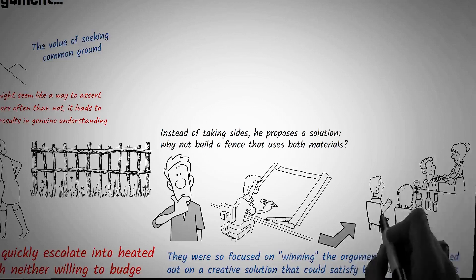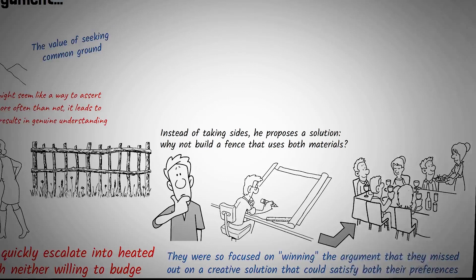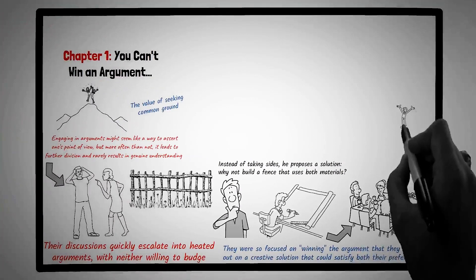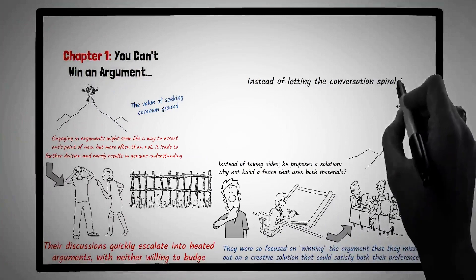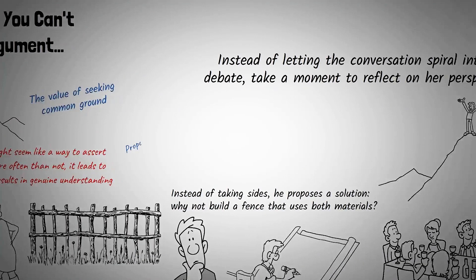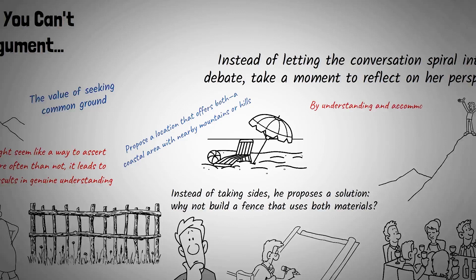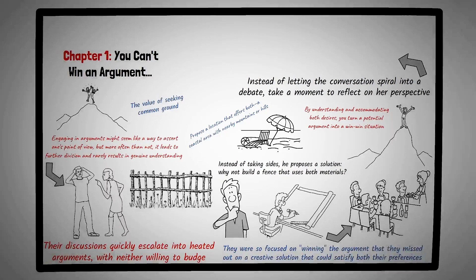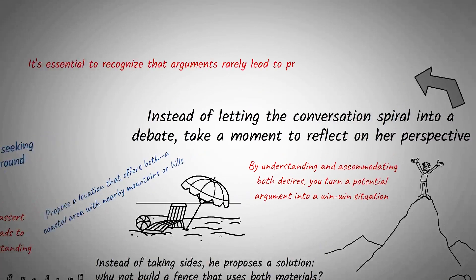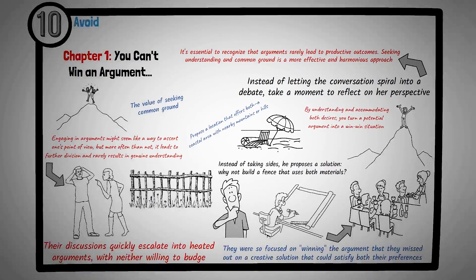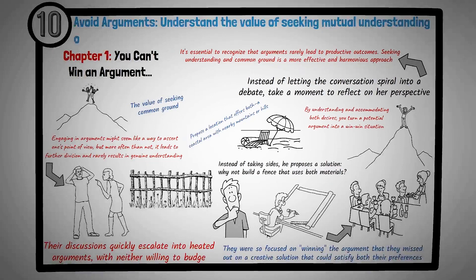Imagine you're at a family dinner where the topic of vacation destinations arises. Your sister is keen on a beach getaway, citing the need for relaxation, while you're pushing for a mountain trip, eager for adventure and hiking. Instead of letting the conversation spiral into a debate, take a moment to reflect on her perspective. Propose a location that offers both, a coastal area with nearby mountains or hills. This way, mornings can be spent on the beach, and afternoons can be dedicated to hiking. By understanding and accommodating both desires, you turn a potential argument into a win-win situation, ensuring a memorable vacation for the entire family. While the instinct to defend our beliefs and viewpoints is natural, it's essential to recognize that arguments rarely lead to productive outcomes. Seeking understanding and common ground is a more effective and harmonious approach. Principle number ten is avoid arguments. Understand the value of seeking mutual understanding over confrontational discourse.